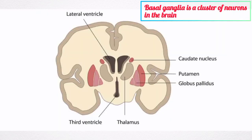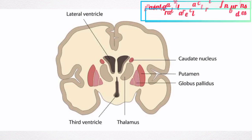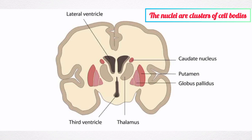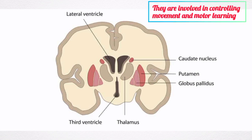Basal ganglia is a cluster of neurons in the brain. The nuclei are clusters of cell bodies. They are usually implicated in controlling movement and also in motor learning.